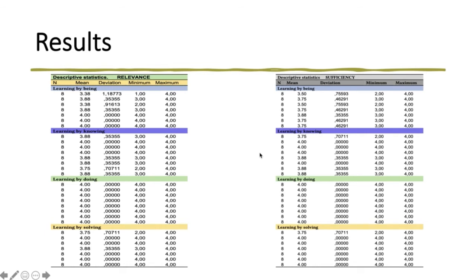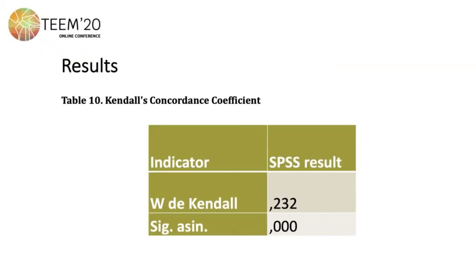As you can see, the points are in accordance with the criteria for relevance and sufficiency as well. Here are shown the results for Kendall's concordance coefficient, including the value of W and also the significance, which confirms the validation of the instrument.